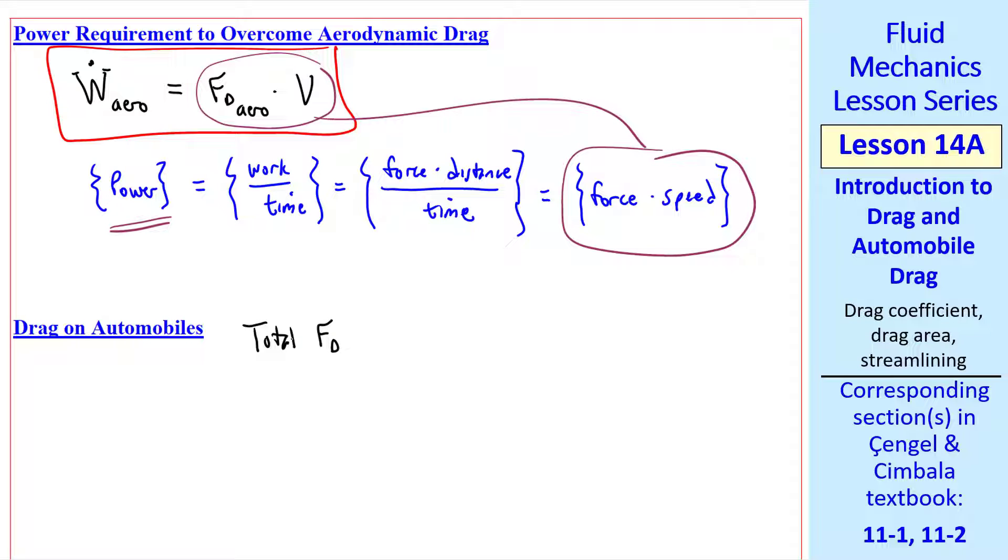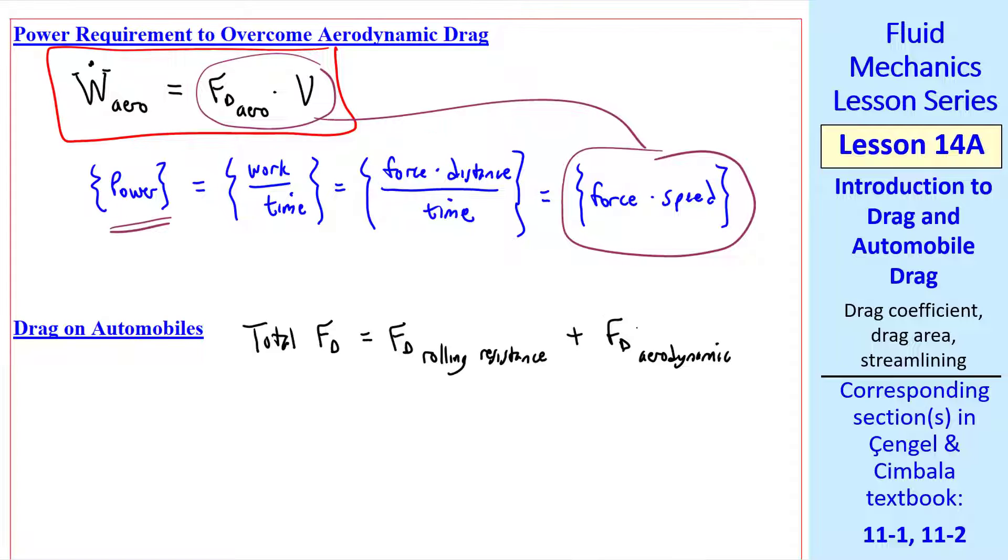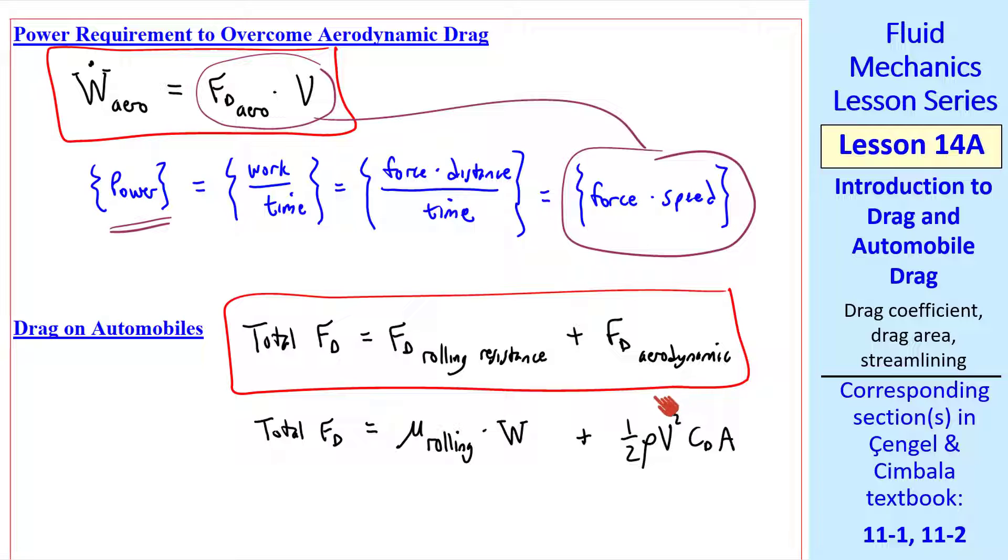For automobiles, the total drag force consists of two parts: a rolling resistance drag plus an aerodynamic drag. Rolling resistance is the drag associated with a tire rolling along the highway. The rolling resistance is the coefficient of rolling resistance times the normal force, which is the weight, as you should remember from your physics class, and the aerodynamic drag is one-half rho V squared times CdA.